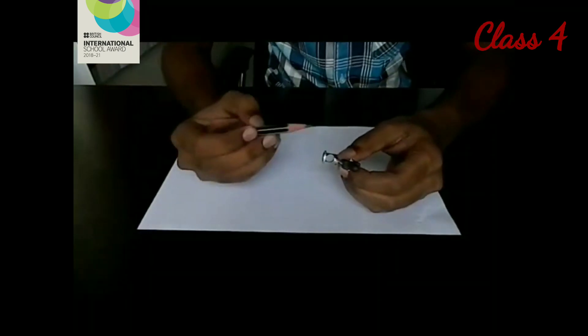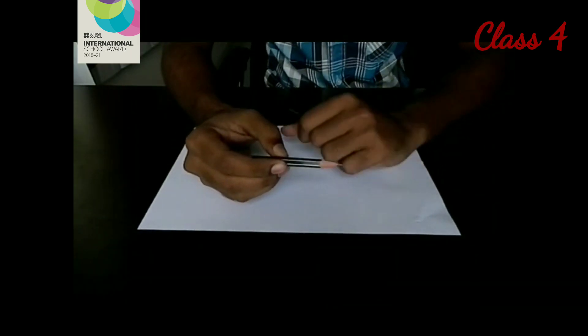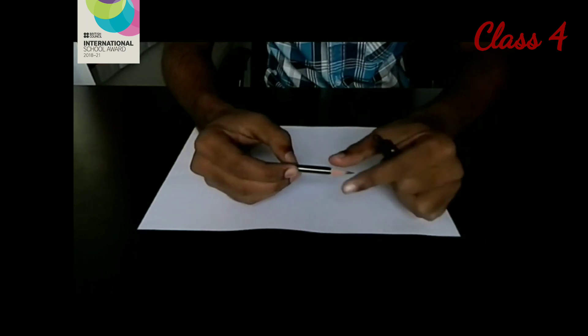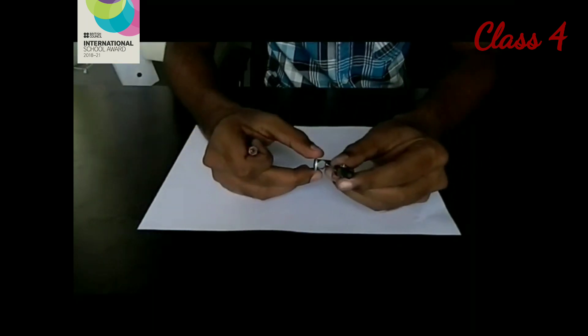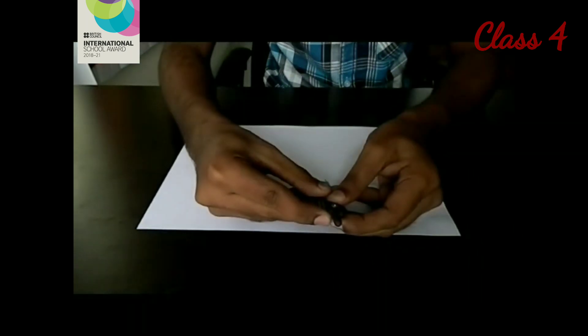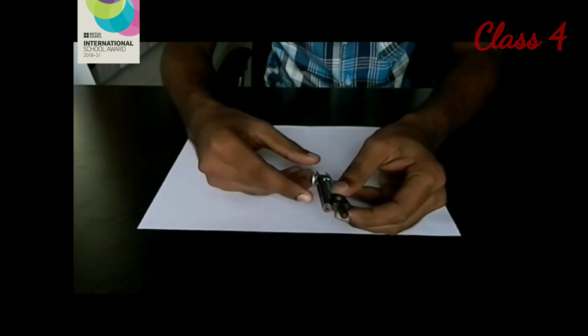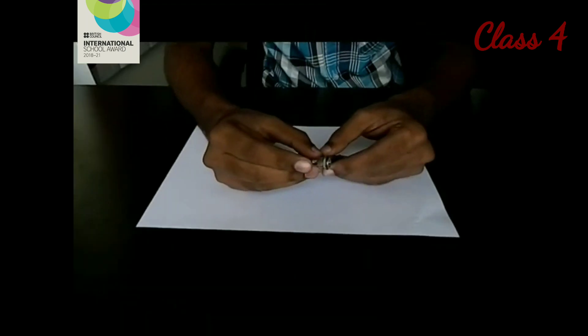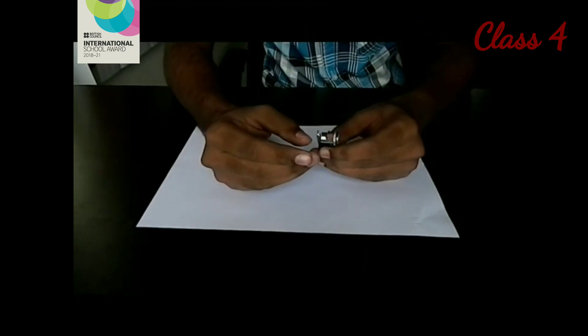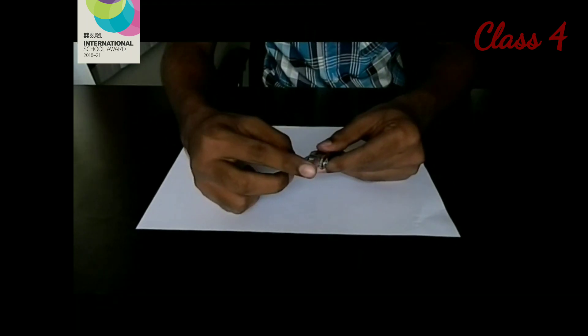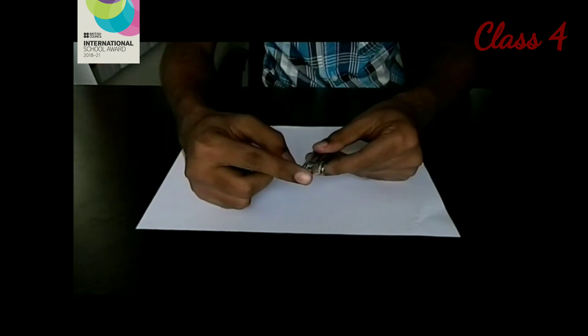First, fix a sharp pencil in the compass. We take a short sharp pencil and pass it through the hole of the compass. Now tighten the screw in the compass to fix the pencil firmly. Make sure the pencil tip and the needle tip are on the same level, i.e., they are in a straight line.